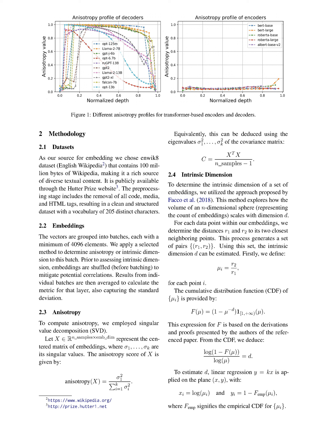Embeddings in transformers encode linguistic nuances and patterns, and studying their anisotropy and intrinsic dimension can provide insights into their behavior. The investigation reveals contrasting anisotropy dynamics between transformer encoders and decoders, with decoders showing a bell-shaped curve and increasing anisotropy during training. Additionally, the intrinsic dimension of decoder embeddings initially expands into higher-dimensional space and then compresses, suggesting a two-phase learning strategy that leads to more refined representations.